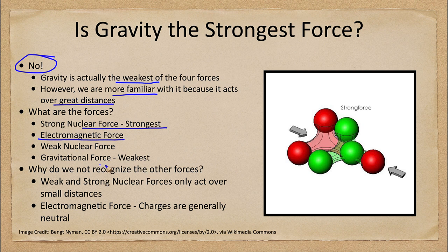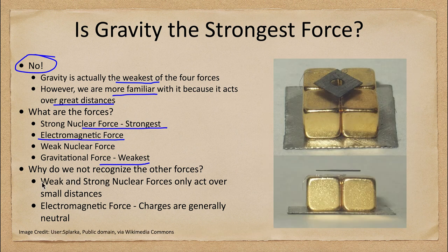Gravity is the weakest of these four forces, and we can see a demonstration of that here. We have a magnet and a small metal plate above it — you can see the plate is actually being held up by the magnetic force. That electromagnetic force is stronger than gravity. The gravitational force is not strong enough to overcome the force of the magnet.